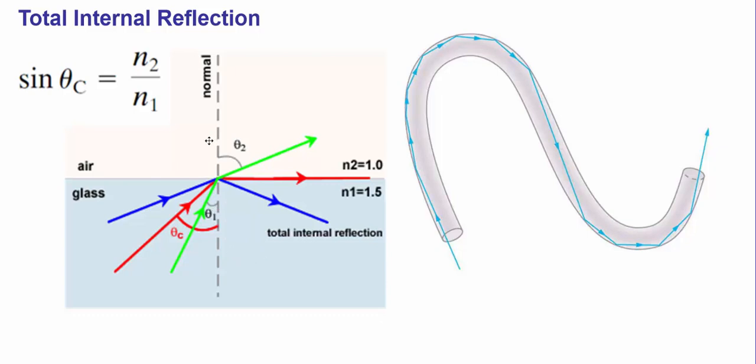So if this started in air and tried to go into glass, it'll always refract. It'll never actually stay trapped in air. Because air has a lower density than glass does.